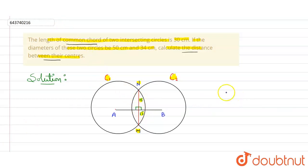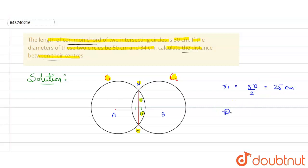Let's find the radius of each circle. The radius of the first circle, r1, will be 50 divided by 2, that is 25 centimeters. The radius of the second circle will be 34 divided by 2, that is 17 centimeters.